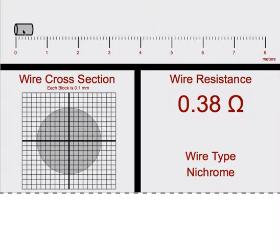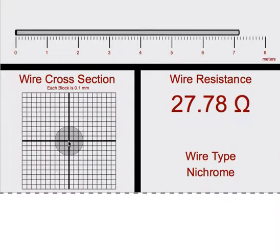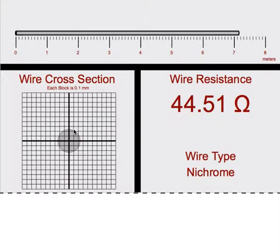Students can change the length of the wire by clicking on the wire itself. Students can change the cross section of the wire by clicking on the wire's cross section.